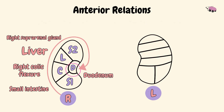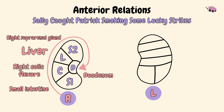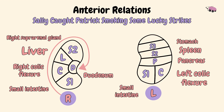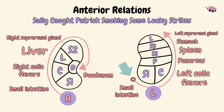For the left kidney we'll use the mnemonic: Sally caught Patrick smoking some lucky strikes. S1 is for small intestine, C for the left colic flexure, P for pancreas, S2 for the spleen, S3 for the stomach, and lastly L for the left suprarenal gland. The mnemonic is read from here to here, ending at the top L.